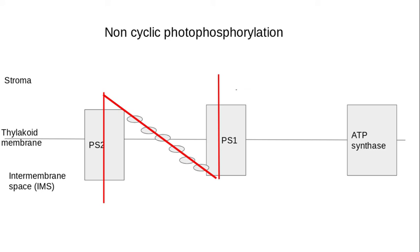Now we need to know about non-cyclic photophosphorylation but also cyclic photophosphorylation. In non-cyclic photophosphorylation that we've just looked at, the electron passes through photosystem 2 along the electron carriers and then into photosystem 1, where after photosystem 1 it then binds to NADP.